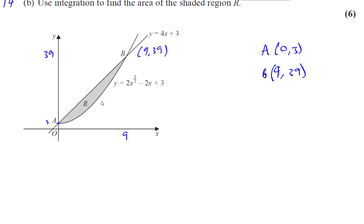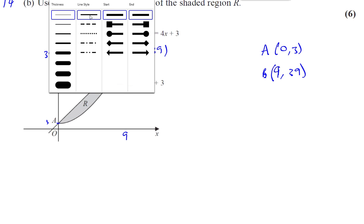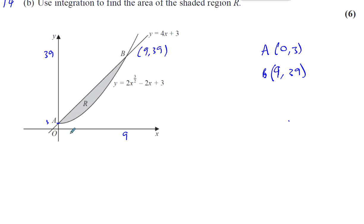Okay, so what we have to do here is write down the... We've got to find the integral between... Now, we know the point A is... The x-coordinate is 0 and the point B, the x-coordinate is 9. So, between 0 and 9, we have to find the area between the line and the curve.